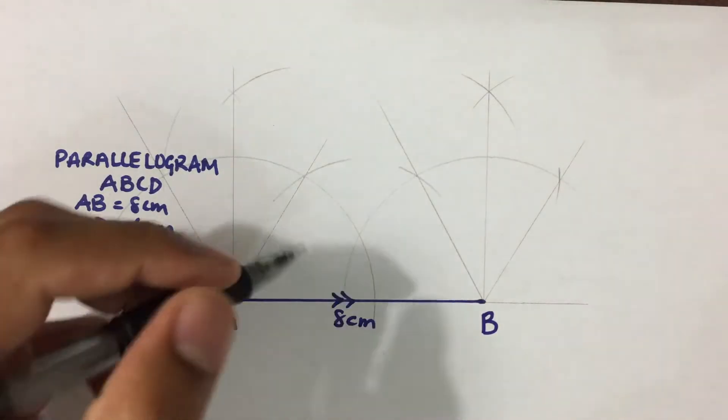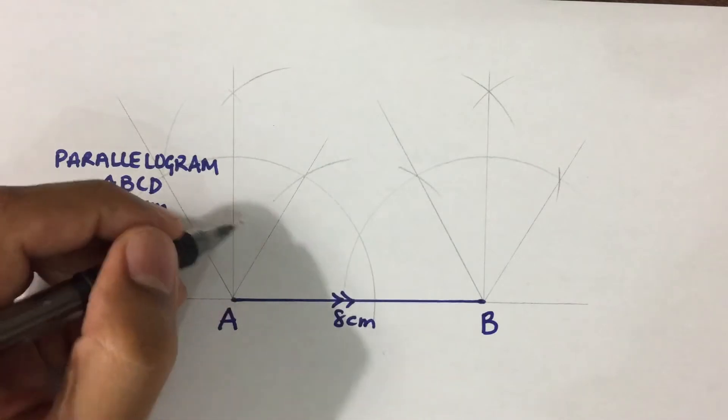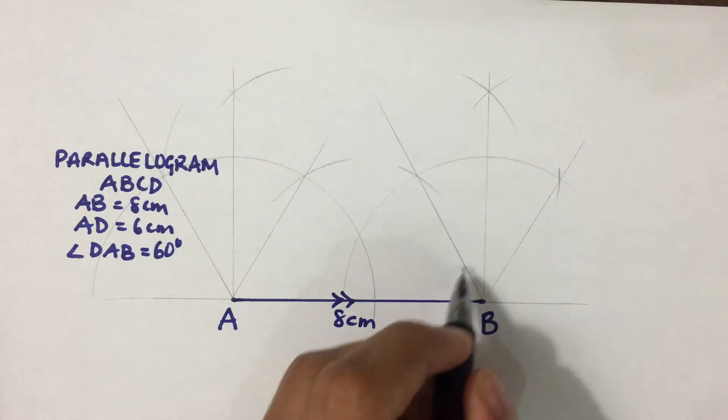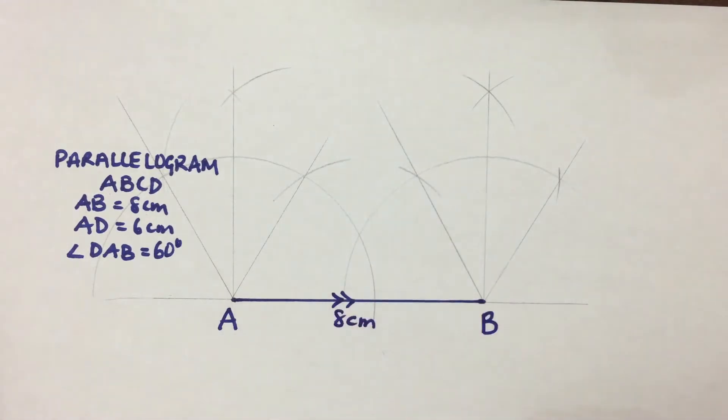And at point A, we're going to make 60 degree, 90 degree, and 120 degree. We construct these. And also at point B, we're going to construct 60 degrees, 90 degrees, and 120 degrees.